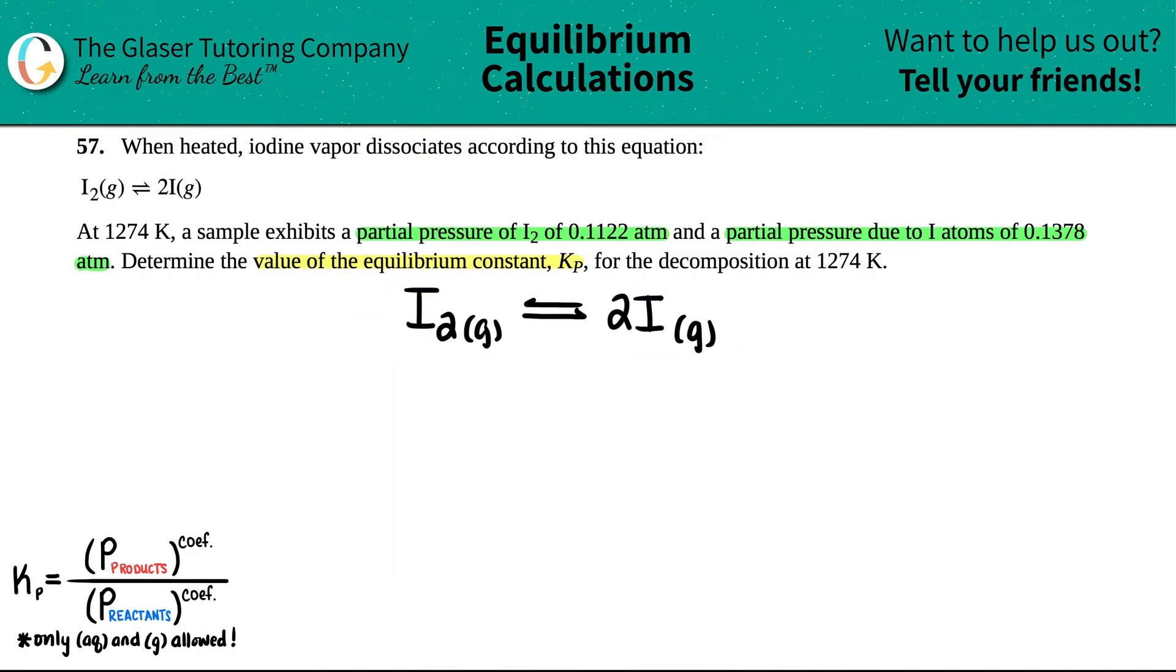Now remember, if we're going to use values to put into the Kp formula, only equilibrium values are allowed, and only aqueous and gases are allowed as well. Since both of these are gases, I'm going to use both of them into my formula.